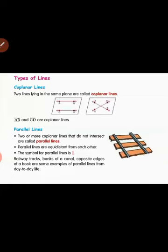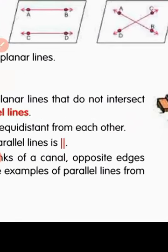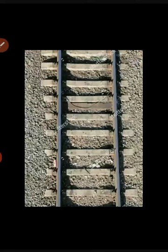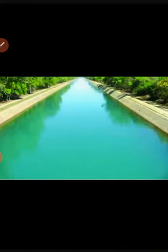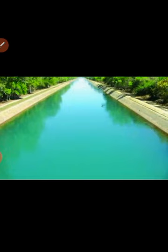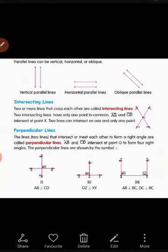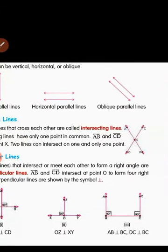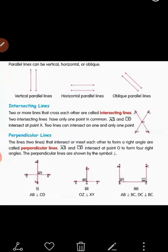Next concept is parallel lines. Two or more coplanar lines that do not intersect are called parallel lines — two lines which do not cut each other. The symbol we use for parallel lines is two vertical lines. Some examples of parallel lines: you can see tracks of a railway line — railway tracks are an example of parallel lines. Even the banks of a canal are an example of parallel lines. Types of parallel lines are vertical parallel lines, horizontal parallel lines, and slanting or oblique parallel lines.